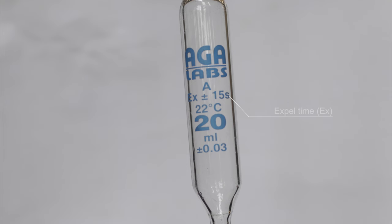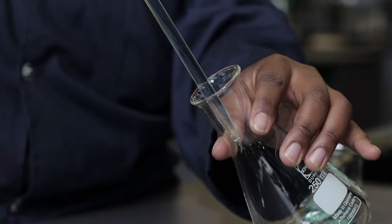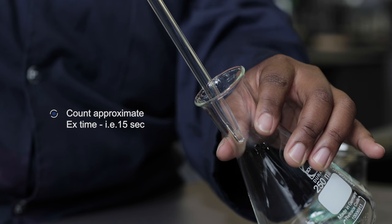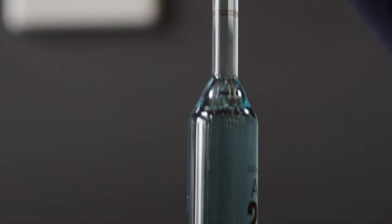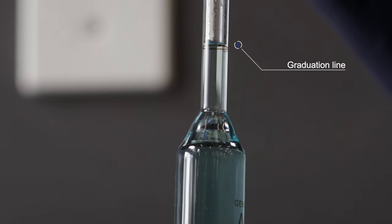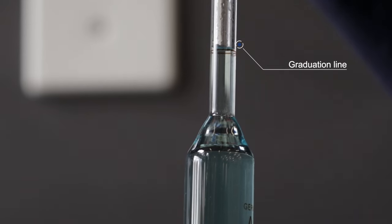This value indicates the expel time. Once all the solution has been expelled you will need to continue to expel for approximately this period of time to ensure that you have delivered all of the liquid. A single graduated ring indicates the calibrated volume for example 20.00 millilitres.